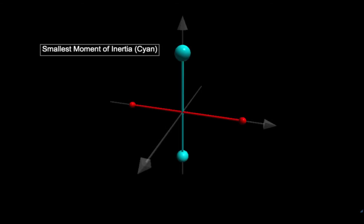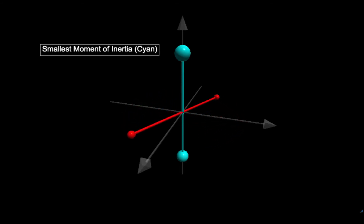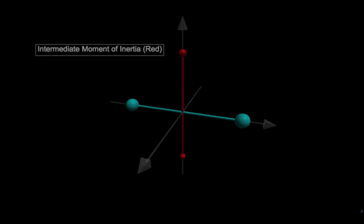We can also rotate the body about the principal axis with the smallest moment of inertia, which coincides with the cyan colored strut connecting the two larger masses. This axis has the smallest moment of inertia because only the small masses are extended away from the axis of rotation. The red strut, which connects the smaller masses, has the intermediate value of moment of inertia.